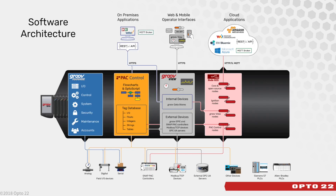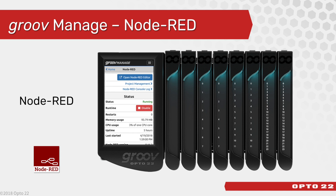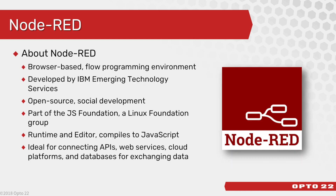Next up is Node-RED — an open source builder environment and runtime embedded directly on the GrooveEpic system. Through the GrooveManage screens, you can start and stop the runtime and view information about Node-RED's status. Node-RED is a browser-based data flow programming tool developed by IBM and now open source. It was developed to make it much easier to work with data, including connecting to web services — like obtaining the current weather — or to connect to databases like SQL Server, MySQL, Postgres, or any other database, either locally within the plant or in the cloud.